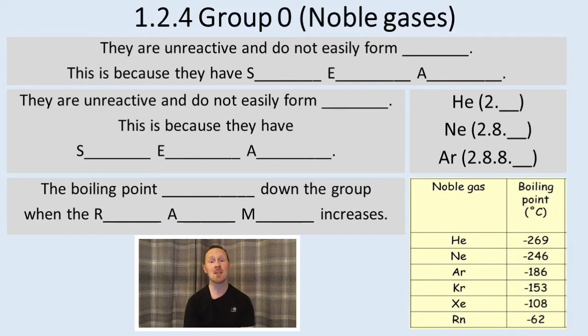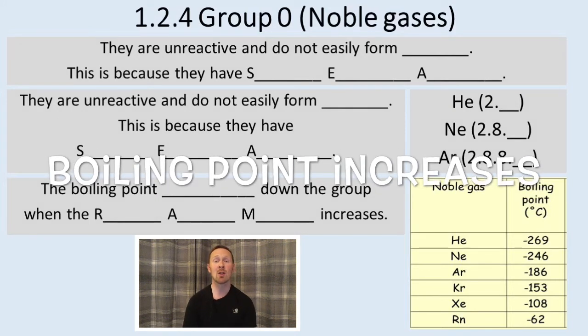Now in terms of the properties, as you go down Group 0, the noble gases, what you find is the boiling point increases. So the temperature at which they boil gets higher.